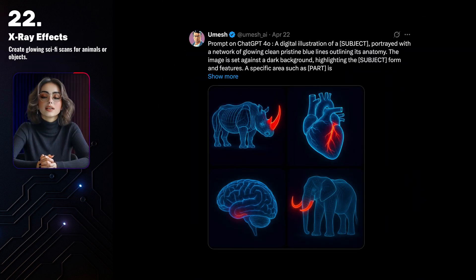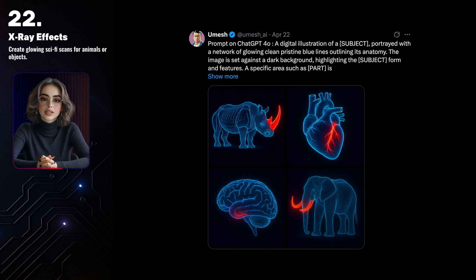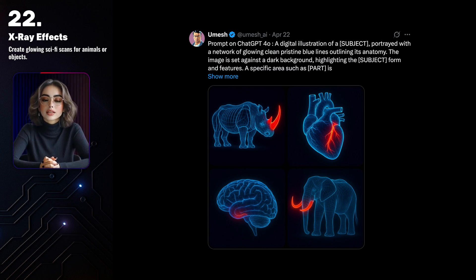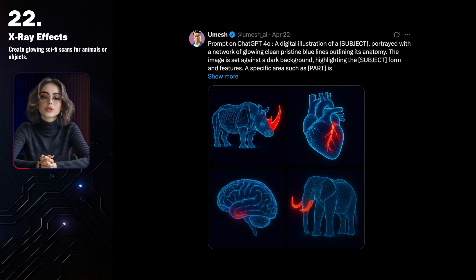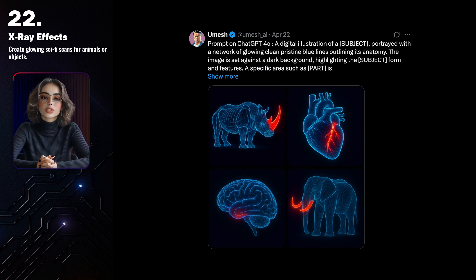For this last idea, I got inspired by a post showing animals and organs outlined in glowing blue lines with certain parts highlighted in red. It looks like a mix between an X-ray and a sci-fi scan — super striking! This kind of visual is perfect for sci-fi projects, tech intros, or educational content with a modern twist.